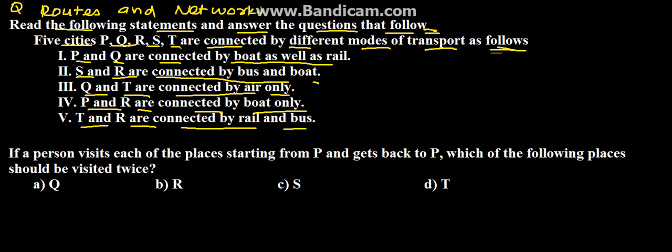Here we have been given that P and R, P and Q are connected with boat or rail. Then we have S and R are connected by bus. So this is R and this is S and both are connected by either bus or boat.